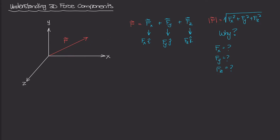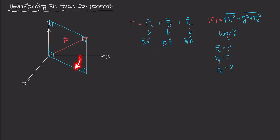To answer these questions, I'm going to erase everything and draw the plane in which this force vector F is acting. This plane is two-dimensional. You can see that the force vector F acts within this plane, all corners are 90-degree angles, and the plane is oriented at some angle from the X-axis.